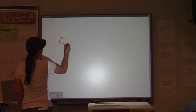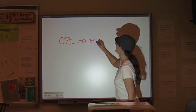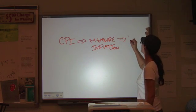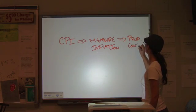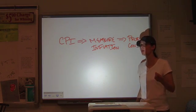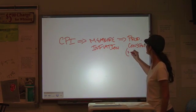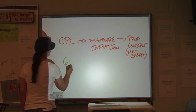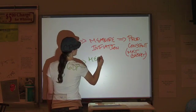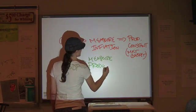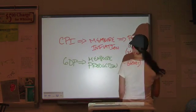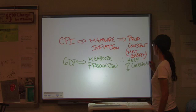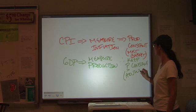So let me go through this one more time. For CPI, we are measuring inflation. Therefore, we keep production constant. That's why you use the same market basket of goods. For GDP, we want to measure production. Therefore, you keep price constant, and that's why you have to adjust for inflation.